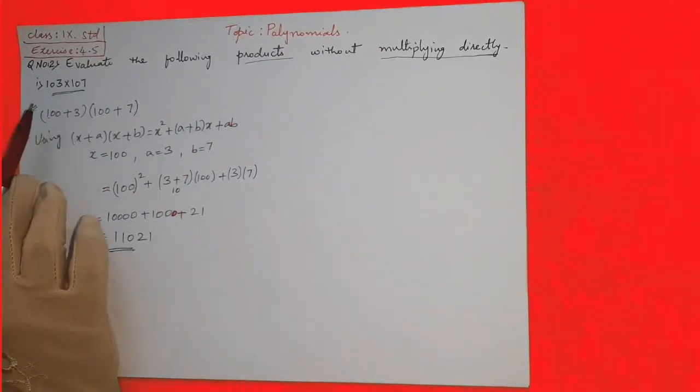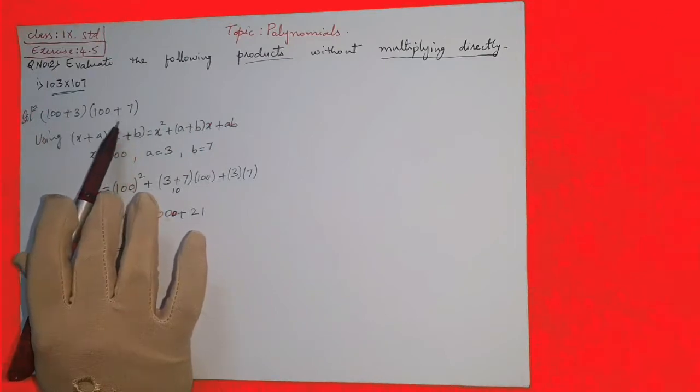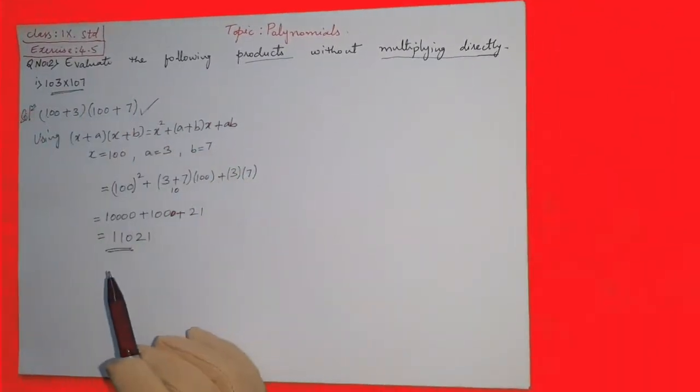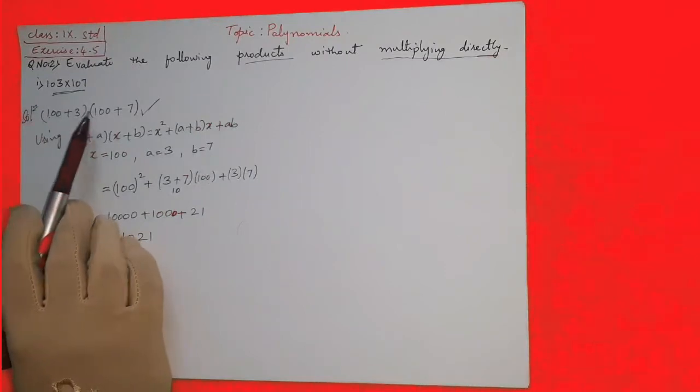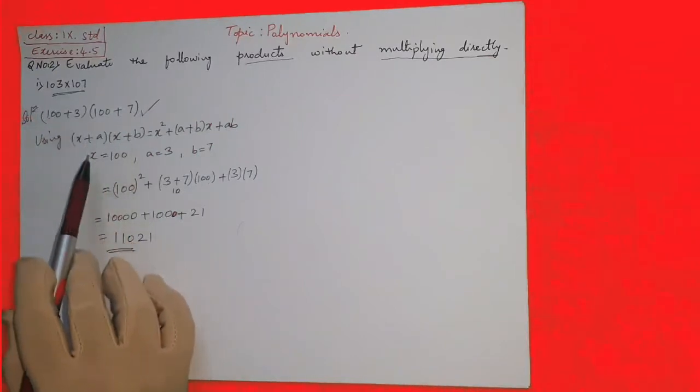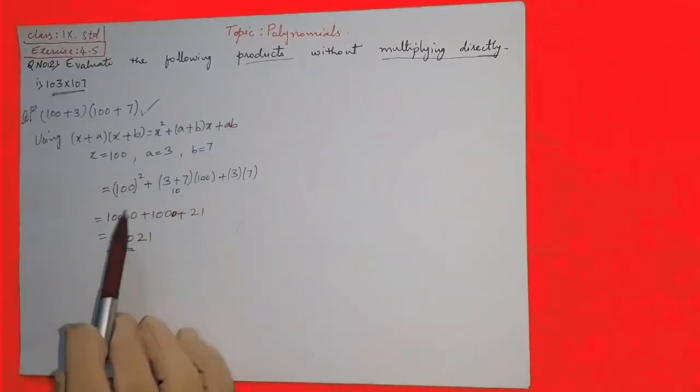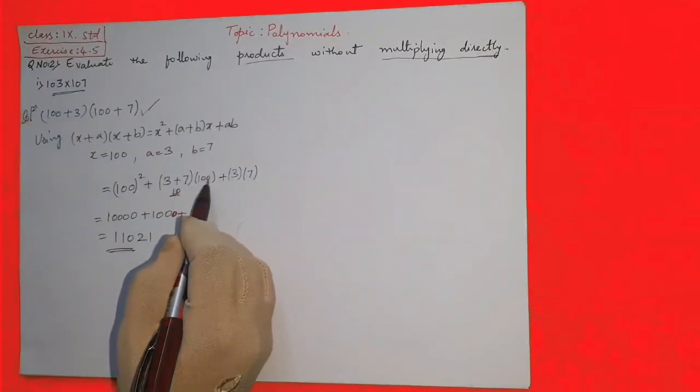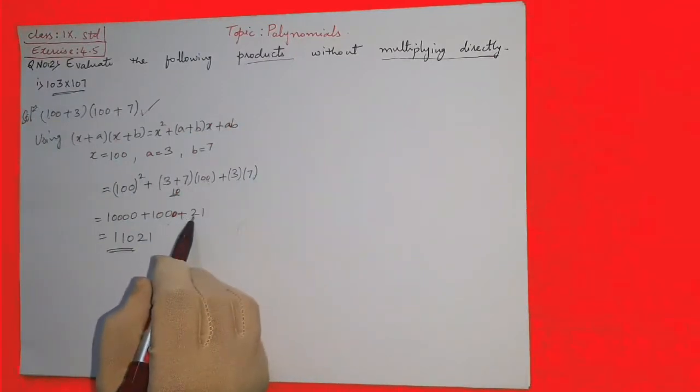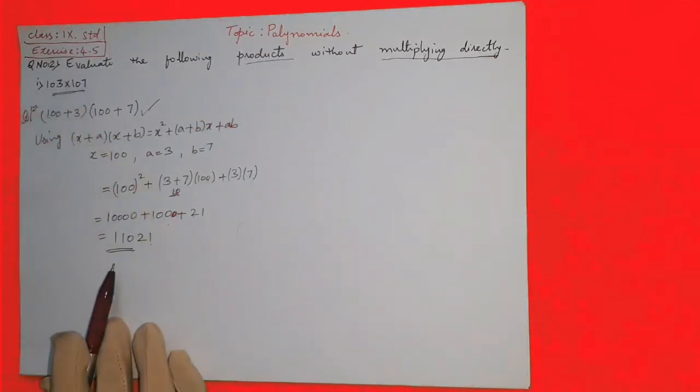First, what do you have to do? Split the numbers. 103 means 100 plus 3, 107 means 100 plus 7. After this, check which identity is applicable. Both first terms are the same, so the identity we use is x plus a into x plus b. Here x is 100, a is 3, b is 7. 100 square is 10,000, 3 plus 7 is 10, 10 into 100 is 1000, 3 into 7 is 21. If you add, you will get 11,021. If you want to verify, multiply both numbers and check, you will get 11,021.